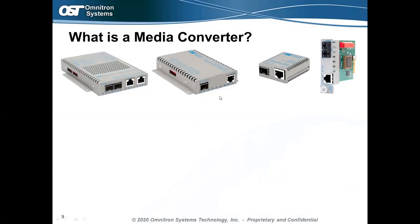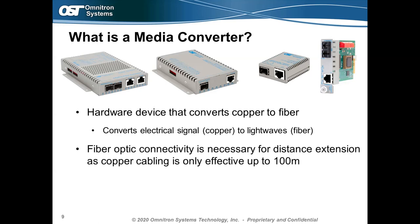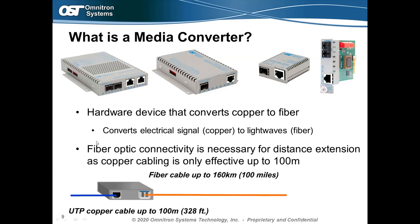So what exactly is a media converter? It's a hardware device that typically converts copper to fiber cabling — that is the media being converted. These come in a standalone device or a plug-in card inserted into a chassis. It converts an electrical signal on the copper line to a light pulse on the fiber line. Fiber is used for long distances — copper cabling per spec can only go about 100 meters or 328 feet before signal degrades. Media converters extend data up to 100 miles over fiber.